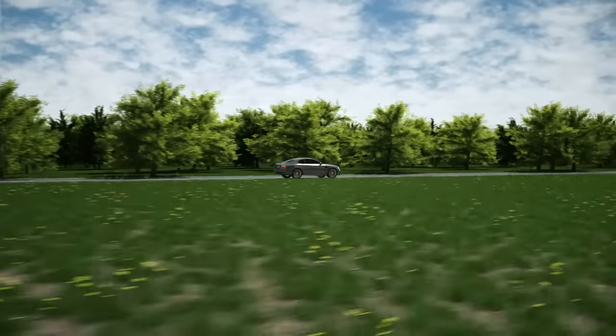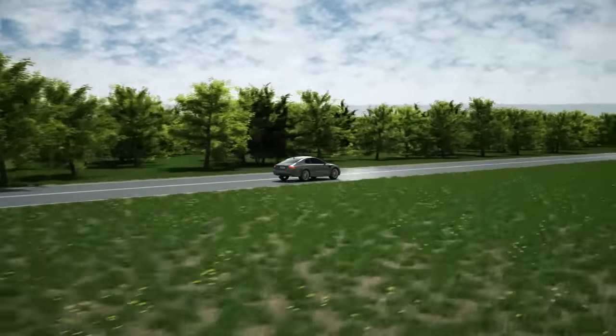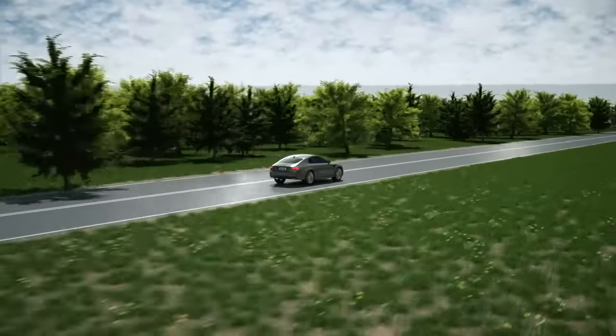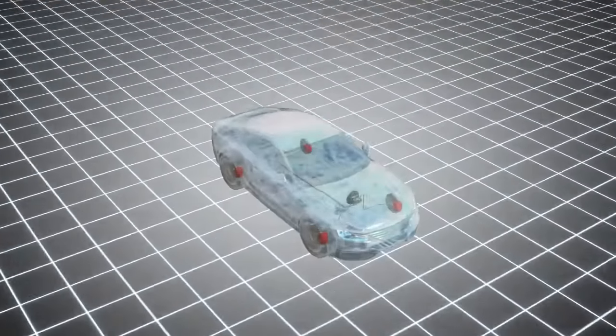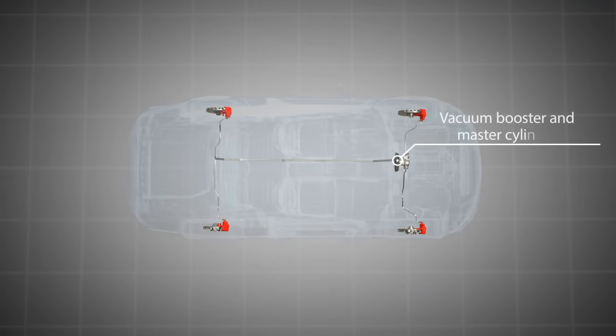Passenger vehicles typically have either a front-rear split brake system or a diagonal split brake system. In the front-rear split brake system, the first brake circuit provides pressure to the front brakes and the second brake circuit provides pressure to the rear brakes.